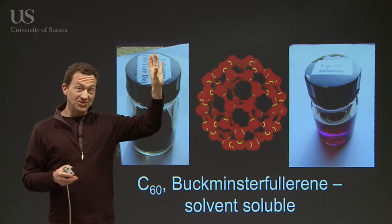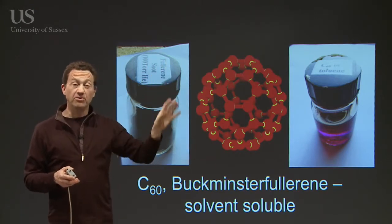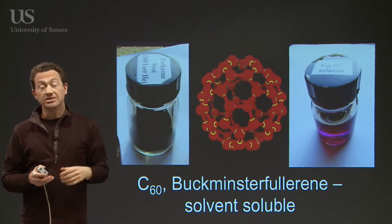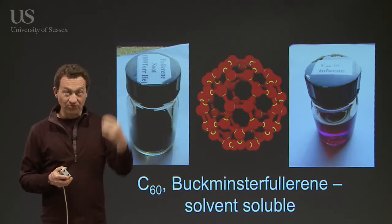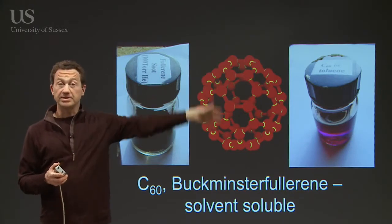The buckyballs and the C60 and the fullerenes are dissolvable in solvents such as benzene or toluene. So you simply get the soot, shake it up in some solvent and filter it, and you can extract the C60 from it.